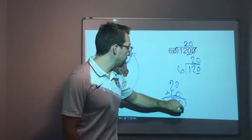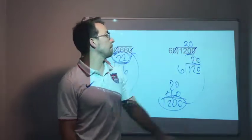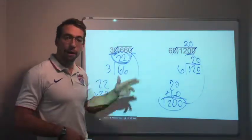So 20 times 60, I have a zero, six times zero is zero, six times two is 12, 1200. Matches my problem, my dividend from the original question. My answer is correct.